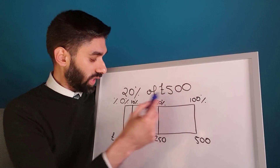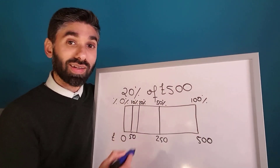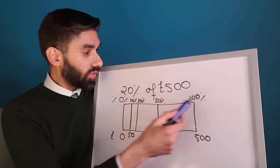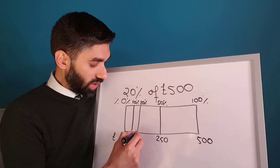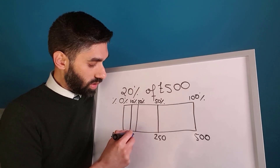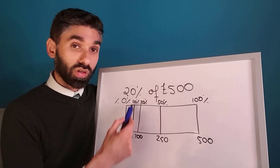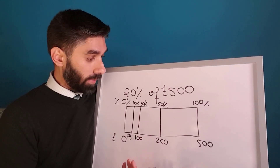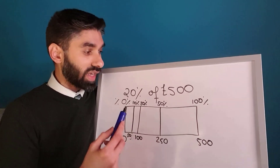Now, what do we do to 100% to get to 20%? We divide by 5. So £500 divided by 5 gives us £100. Alternatively, you can double the 10% answer: 10% is £50, so 20% is £100. So 20% of £500 = £100.